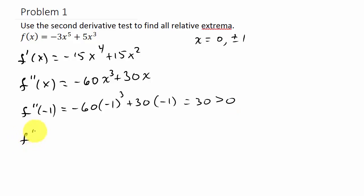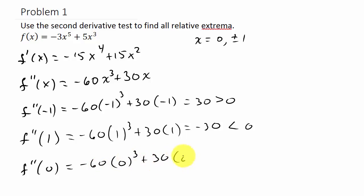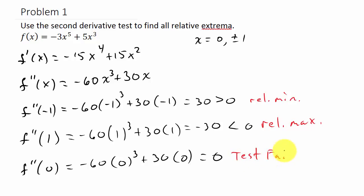And then f double prime of positive one is negative 60 times one cubed plus 30 times one. That is going to be negative 30, which is less than zero, so we have a relative maximum there. And then f double prime of zero is negative 60 times zero cubed plus 30 times zero, which is zero — so the test fails here. So here we have a relative minimum, here we have a relative maximum, and here the test fails.